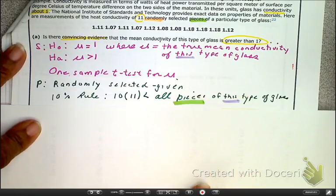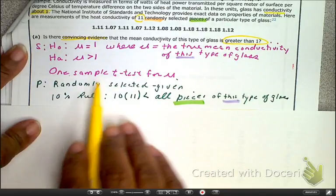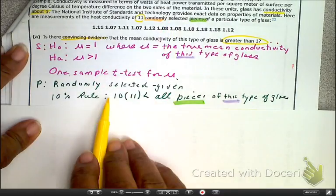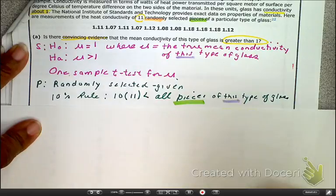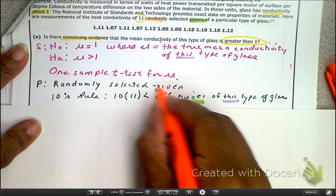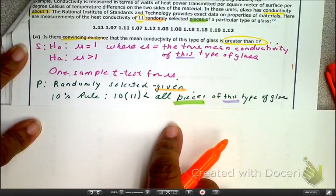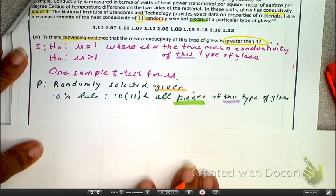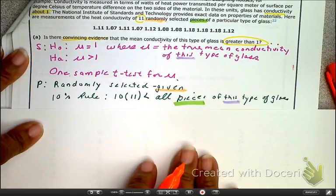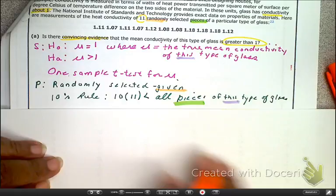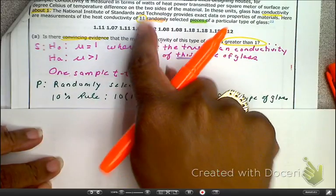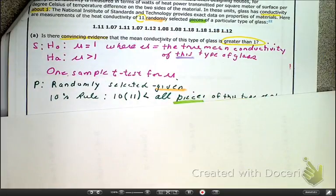So now let's look. Here randomness is given. We have our 10% rule. And now we have to concern ourselves about normality because we only have a sample size of 11. So pull out those calculators.